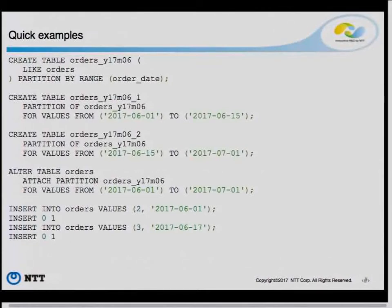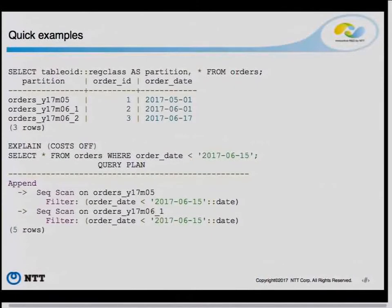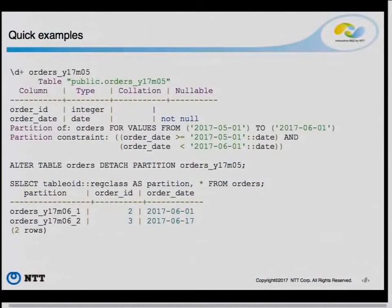Once you insert data, it goes into the new partitions you just defined. So it's a multi-level partition: you created a partition table and attached it as a partition. One partition was a simple leaf partition, and you created a partitioned table at the second level. Partition pruning works: if you try to select a range, it will just scan the partitions the query asks for. You can describe the partition and see that it shows the values and the constraint.